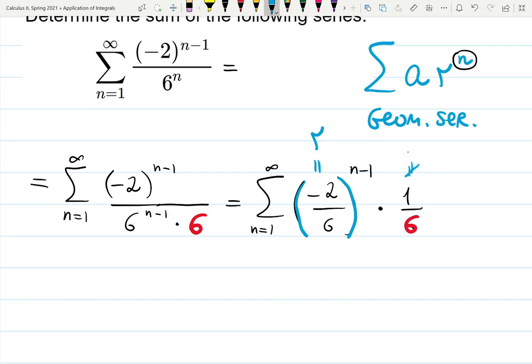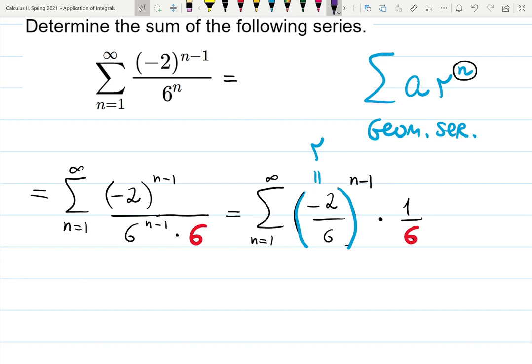This thing is not always a. You have to be careful with this. a is the first term. This is the first term, and the first term depends on the counter. If n starts with five it will be different. If n starts from zero it will be different, so you have to be careful.